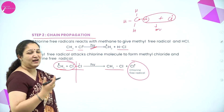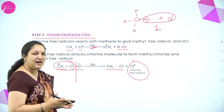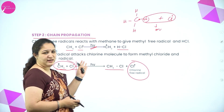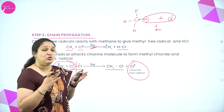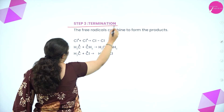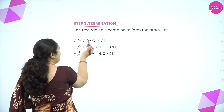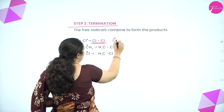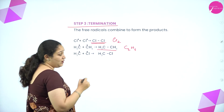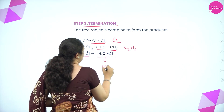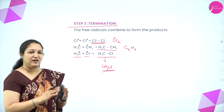In every step, new chlorine free radicals are produced, sustaining the chain reaction. The third step is chain termination: free radicals combine with one another to stop the reaction. Possibilities include: Cl• + Cl• → Cl₂; CH₃• + CH₃• → C₂H₆; or CH₃• + Cl• → CH₃Cl. Any of these reactions terminates the chain.